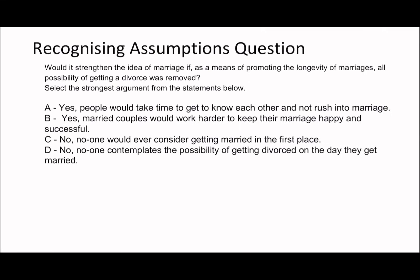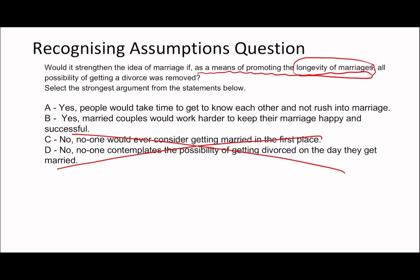Next question — pause and identify the clause first, then rule out answers methodically. The question is: 'Would it strengthen the idea of marriage if, as a means of promoting the longevity of marriages, all possibility of getting a divorce was removed?' The clause is the middle part: 'as a means of promoting the longevity of marriages.' Remove it and the rest of the question still makes sense. The key idea is longevity of marriages. Jumping to C and D immediately: both can be ruled out because they're blanket statements.